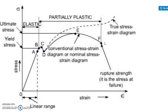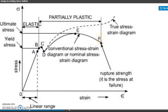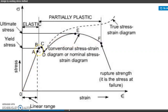The stress-strain diagram shows: from 0 to A is the straight elastic line; A to B is the L stress-strain point; B to C is the linear elastic starting point. The region from D, E, and F forms the partially plastic section on the conventional stress-strain diagram. From O to A to B represents the elastic section.